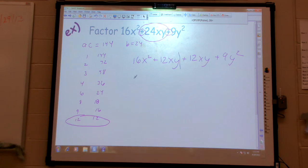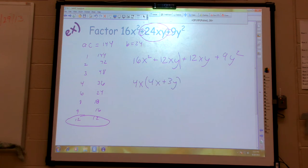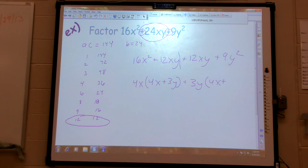So now, what can I pull out of the front? More than 4x. I'm left with 4x plus 3y. Now on the back, what do they have in common? A 3y. So I'm left with 4x plus 3y.